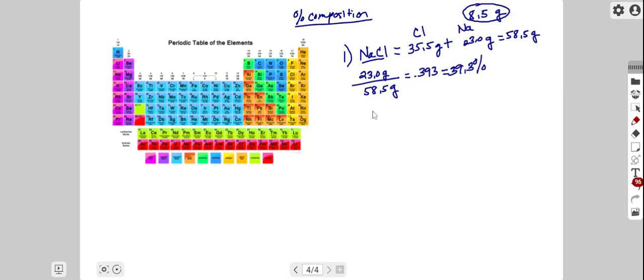We have an 8.5 gram sample. If we multiply that by this ratio, this tells us how many of those 8.5 grams consists of just sodium. Multiplying by that fraction, we determine that 3.3 grams of that eight and a half gram sample consist of sodium, reported to two significant figures. Let's try another example.